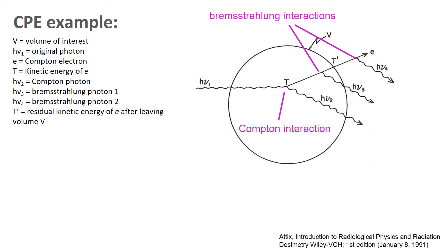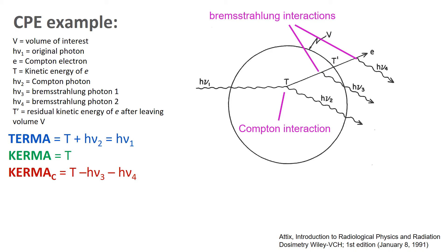The electron leaves the volume with residual kinetic energy T-prime. As discussed in the prior video: TERMA equals T plus h-nu-2, which equals h-nu-1. Kerma is the kinetic energy given to the electron, that's T. Collision kerma is the portion of energy given off in collision events: T minus h-nu-3 minus h-nu-4. And radiative kerma is the portion given off through radiative events: h-nu-3 and h-nu-4.